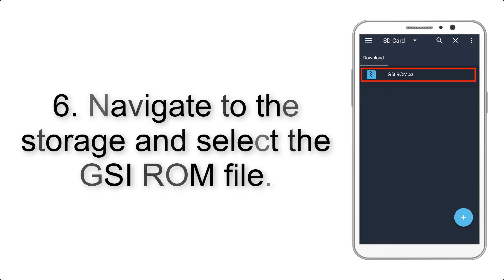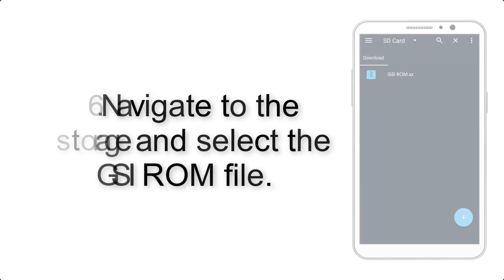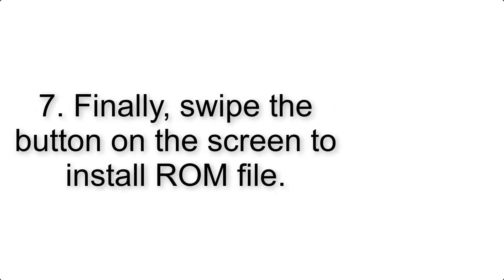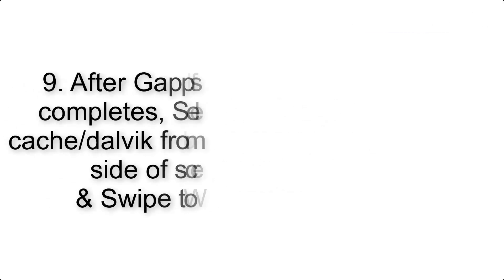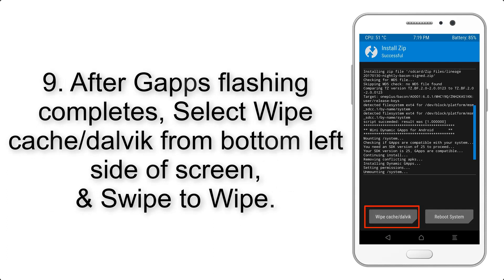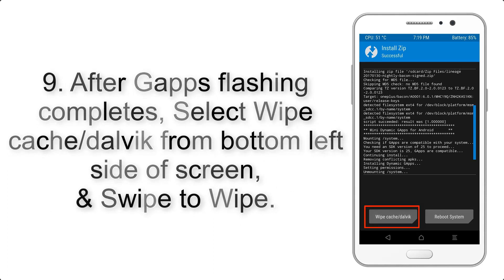Step 5: Go back to the recovery main screen and tap on the Install button. Step 6: Navigate to the storage and select the GSI ROM file. Step 7: Finally, swipe the button on the screen to install the ROM file.